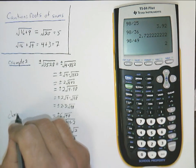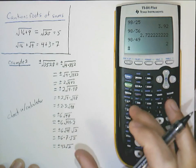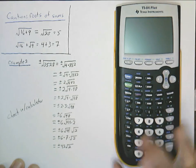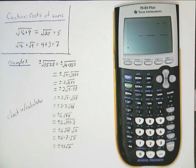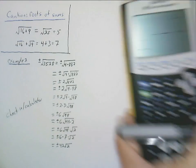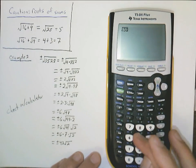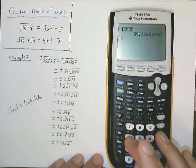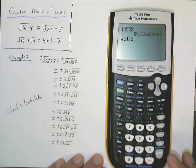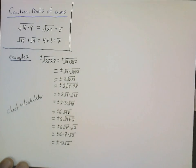Let's verify: the square root of 3,528 in the calculator, and 42 times the square root of 2 in the calculator — they give the same decimal. Fantastic, we did it right.